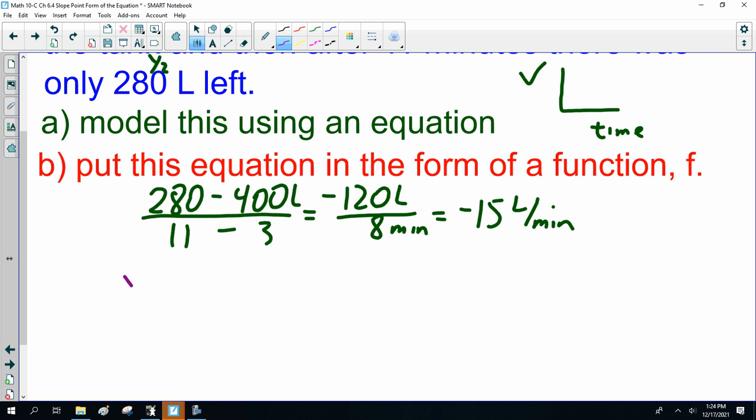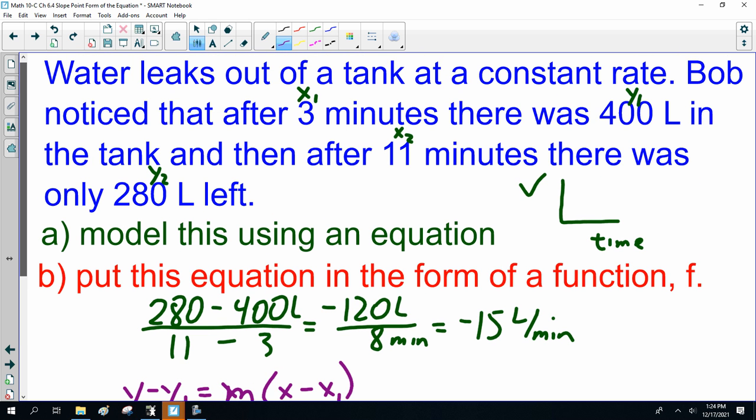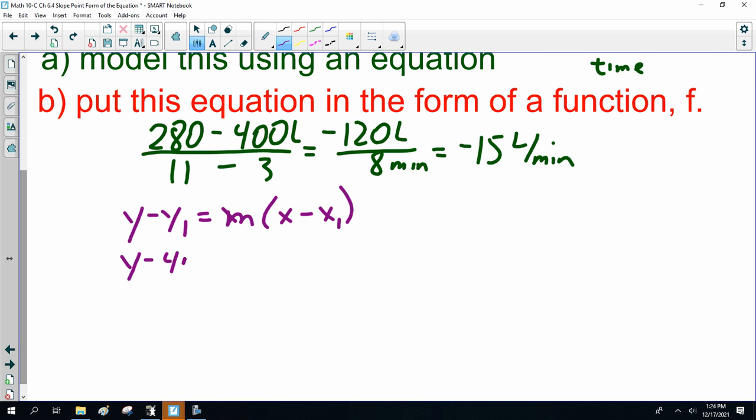So, here we go. So, that is y minus y1 equals m, x minus x1. Which point am I going to choose? It doesn't matter. 3 and 400, because I happen to be the first one mentioned. So, y minus 400 equals minus 15, x minus 3. Okay?